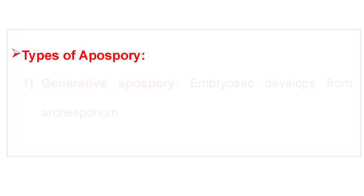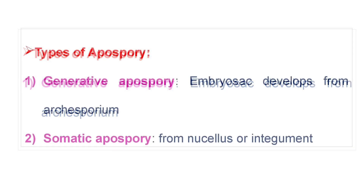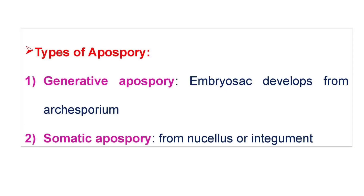Apospory is of two types. The first is generative Apospory, in which the embryo sac develops from the archesporial cell. The second is somatic Apospory, in which the embryo develops from the nucellus or integument.